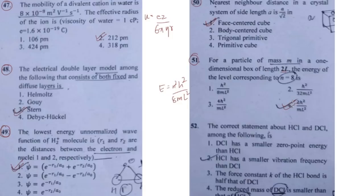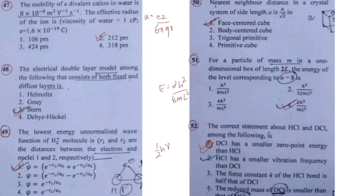Question 52 is a good question from physical spectroscopy. The correct answer should be option number one: DCl has a smaller zero-point energy than HCl. Zero-point energy is given by ½hν, so it depends on frequency. The frequency of DCl is less than that of HCl because DCl has a greater reduced mass. The other statements are incorrect — the force constant does not depend on mass, so option three is also wrong. Option number one is correct.